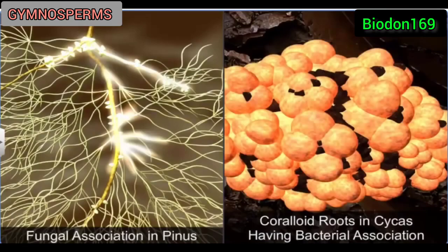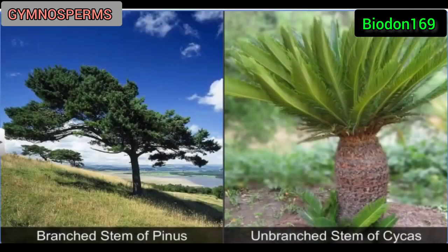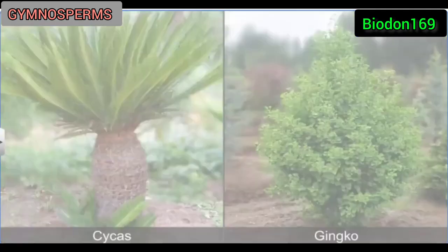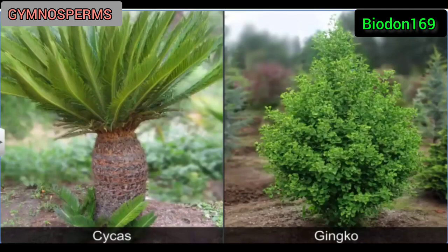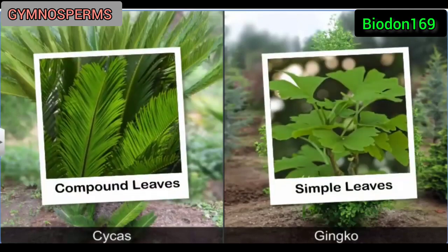While in other genera such as Cycas, small specialized roots called coralloid roots have an association with N2-fixing cyanobacteria. The stems of a gymnosperm can be branched or unbranched, and the leaves can be compound as in Cycas, or simple as in Ginkgo.